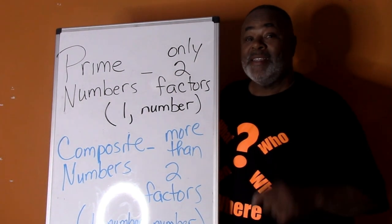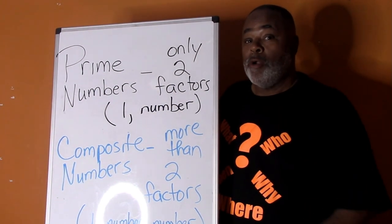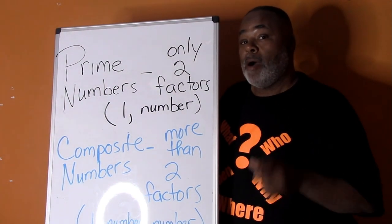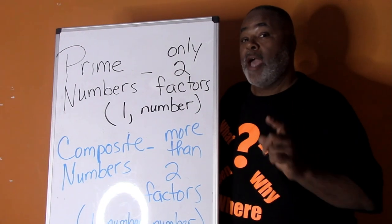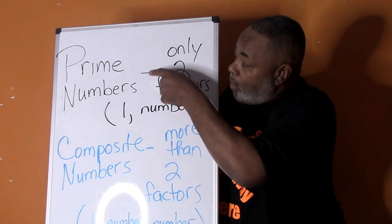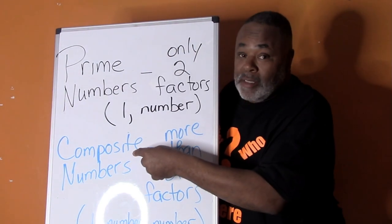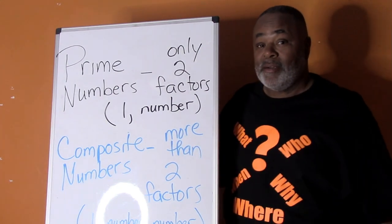Hey everybody, this is Fun with Tab, and we're going to talk about two types of numbers: prime numbers and composite numbers.